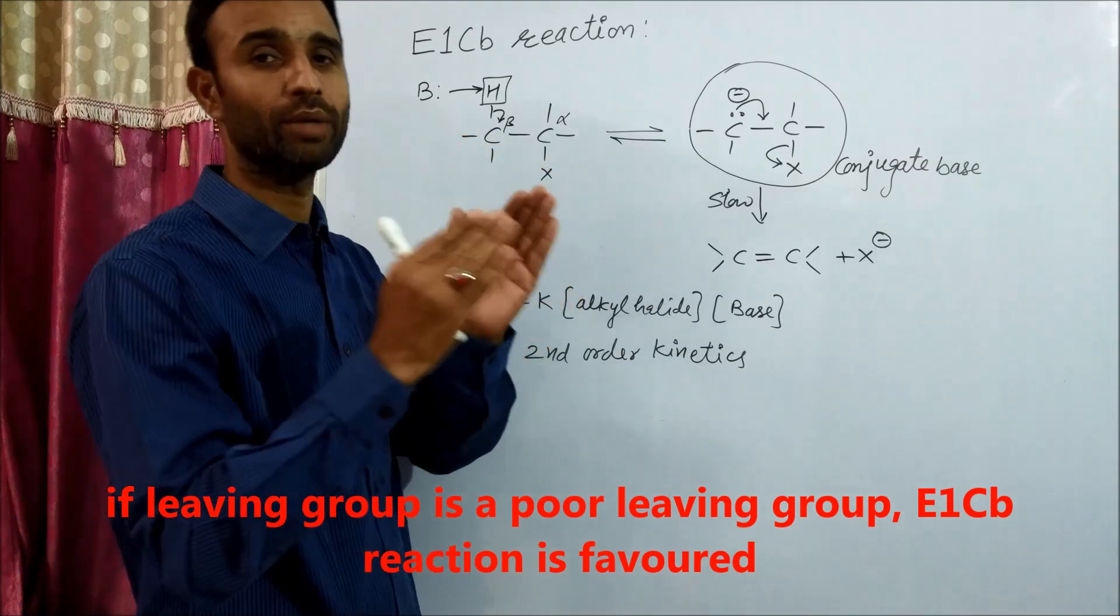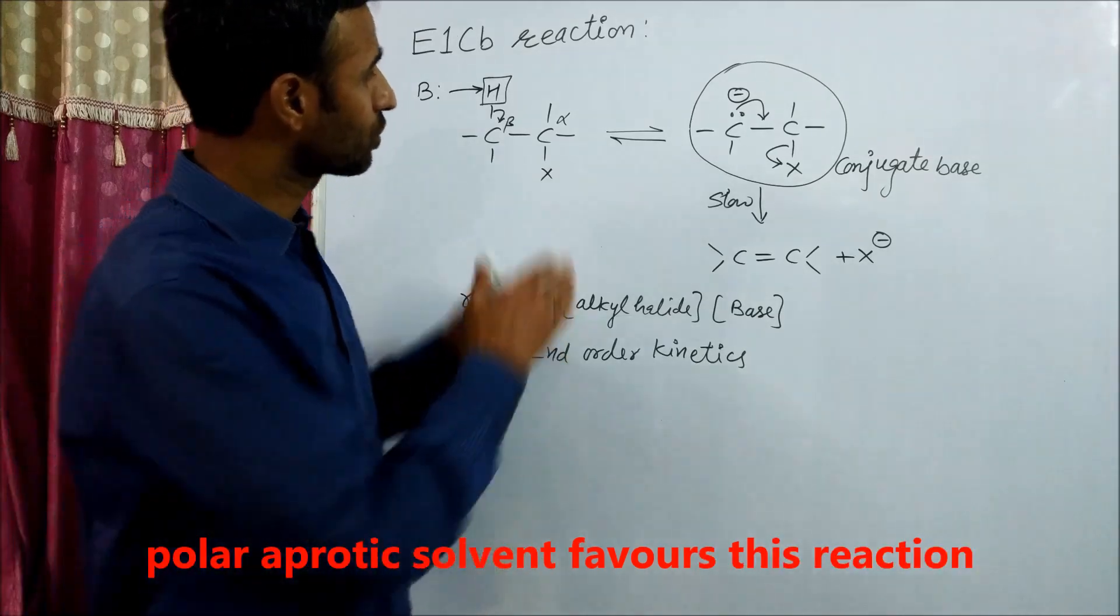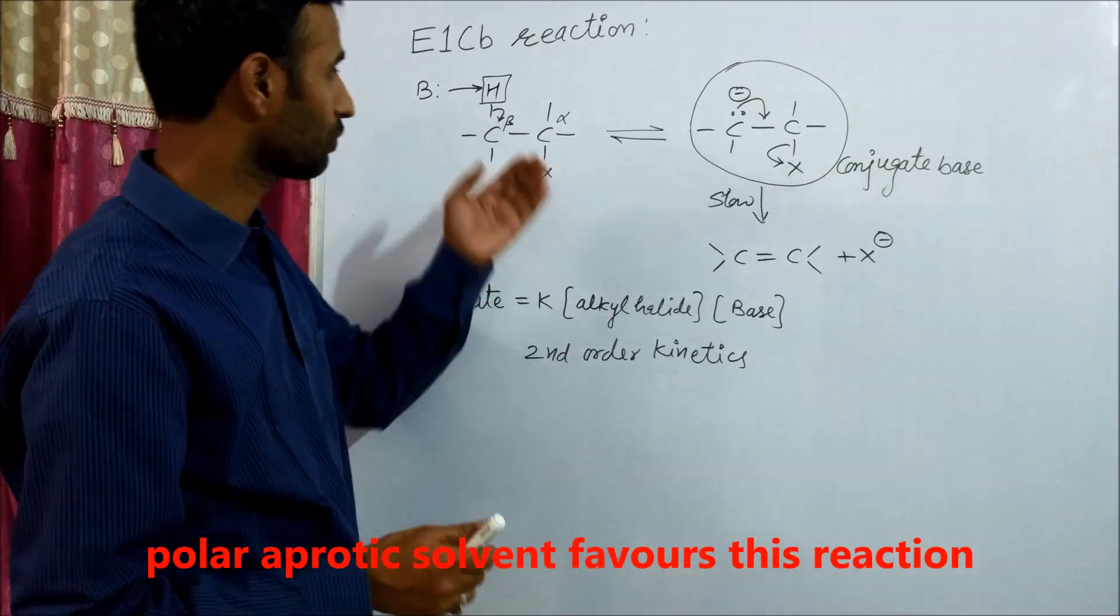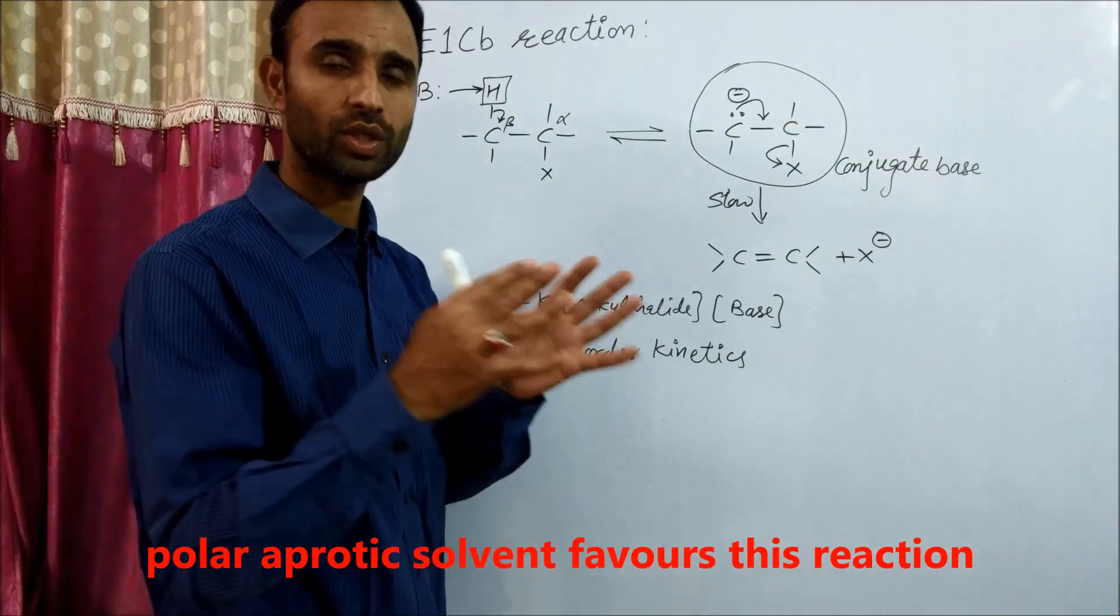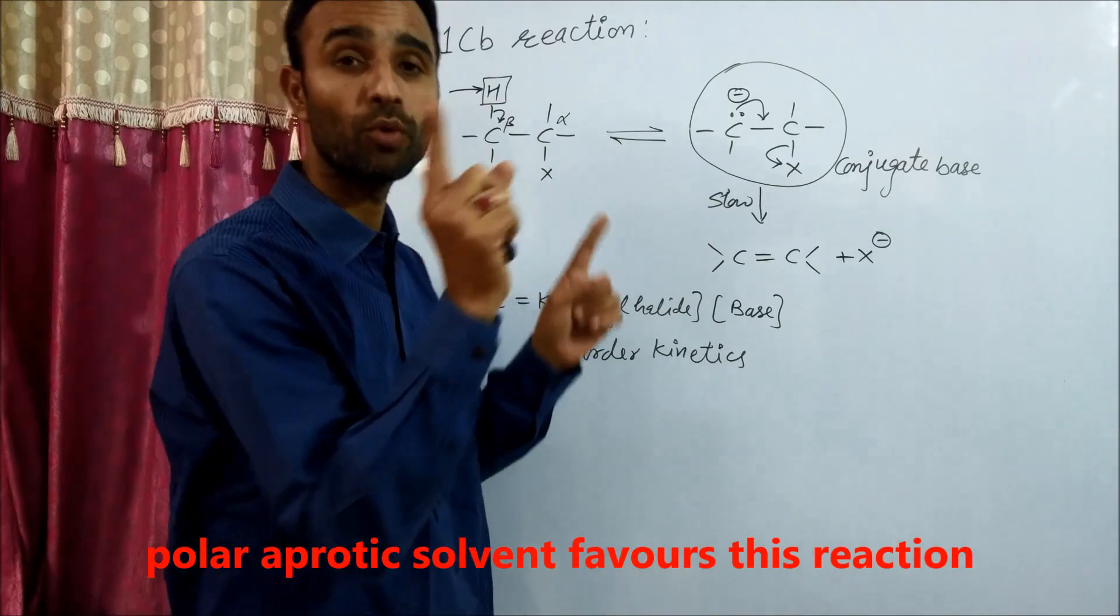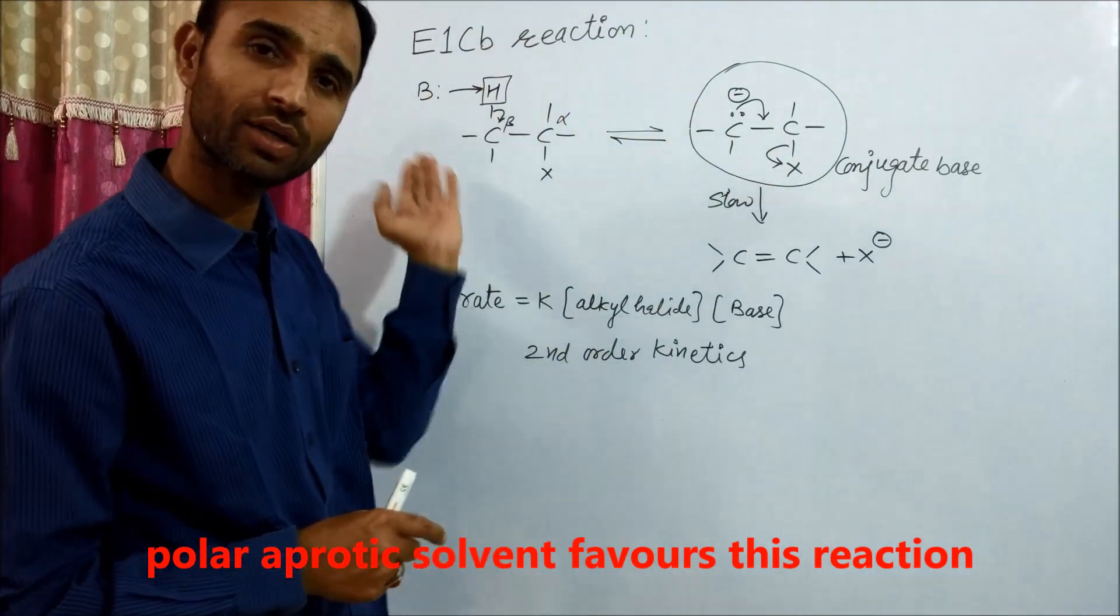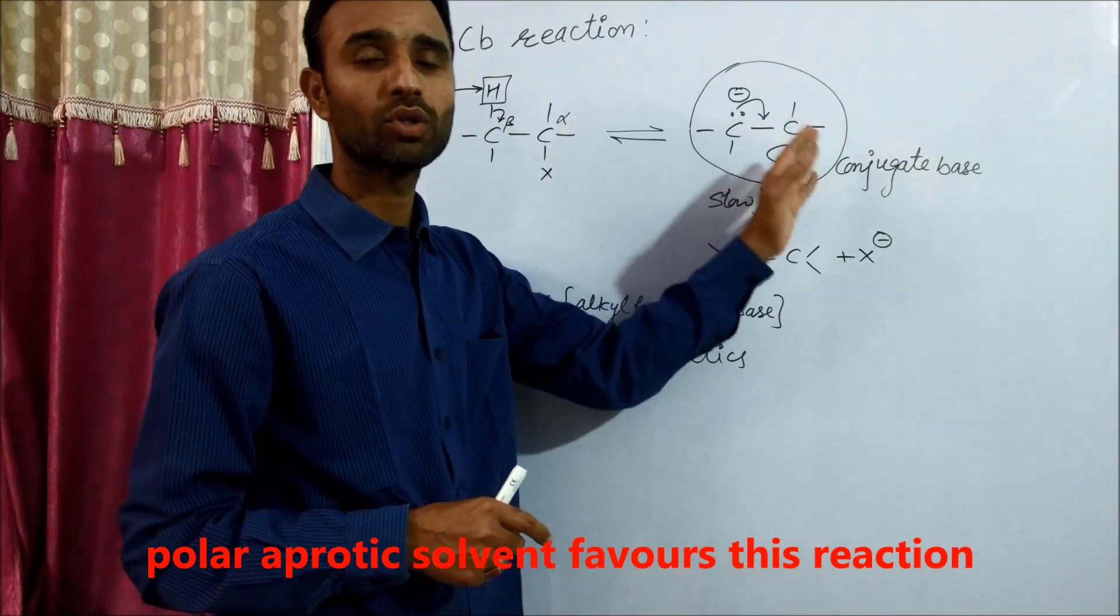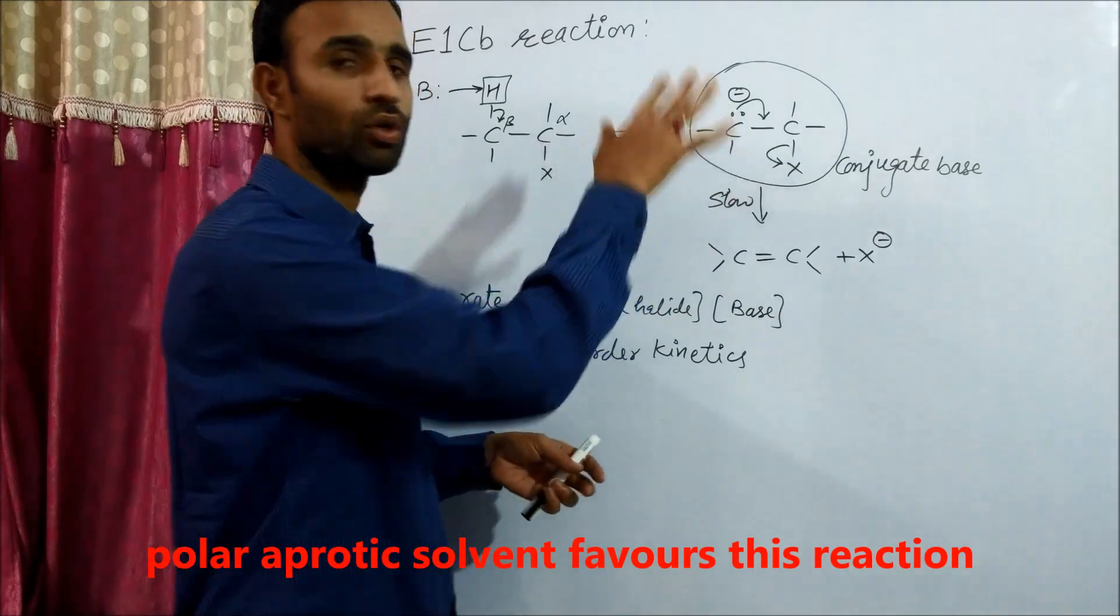Which type of solvent favors this reaction? Since a carbanion is formed, the solvent should be polar but it should not be protic, because if it is protic the reaction reverts back. So polar aprotic solvent favors this reaction.